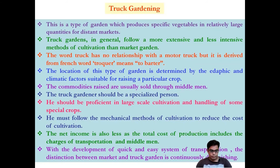India produces a variety of flowers. Traditional flowers grown include jasmine, marigold, crossandra, rose, and aster. Commercially grown flowers include rose, orchids, anthurium, carnation, gerbera, and lilies. These are the main flower crops grown in India.